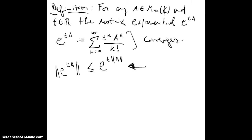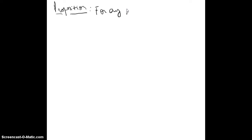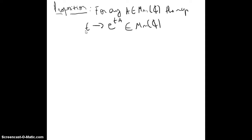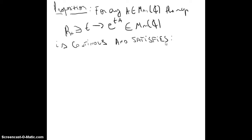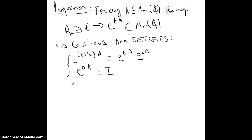And one can see the following proposition: for any A in Mn of complex numbers, the map t to e^(tA) — from R+ to Mn of complex numbers — is continuous and satisfies: e^((t+s)A) equals e^(tA)·e^(sA), and e^(0·A) equals the identity.